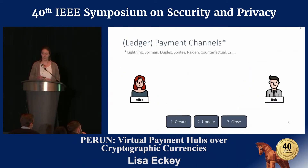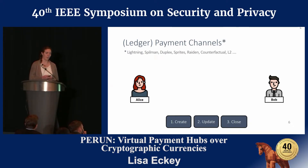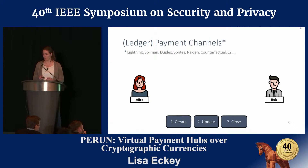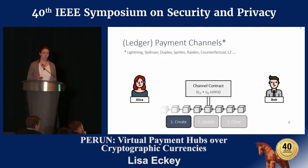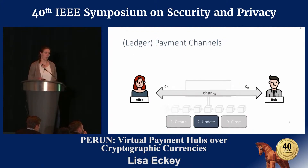I'll now show how to build a ledger payment channel. These have been proposed in other literature as well — most notably the Bitcoin Lightning Network. The idea always involves three phases: open, update, and close. To open a channel, Alice and Bob create a channel contract and submit their funds — Alice locks CA coins and Bob locks CB coins. Once the channel is funded, we can forget about the smart contract for now.